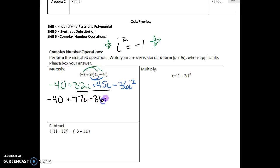Now it may look like we're done, but I gave you a hint in the directions: write your answer in standard form, which is a + bi. Your final answer should never have i squared in it because i squared is negative 1. So we're going to plug negative 1 in for i squared. We're going to have -40 + 77i - 36 times (-1). Negative 36 times negative 1 makes it a positive 36. I can combine like terms: -40 + 36 gives me -4 + 77i.